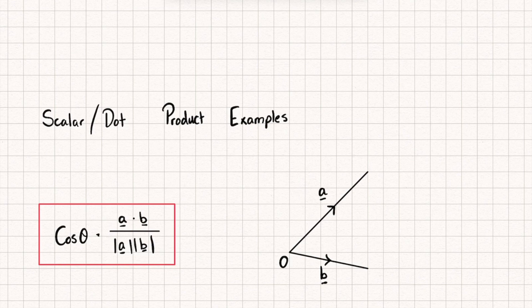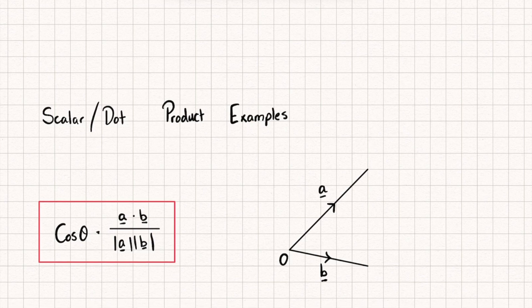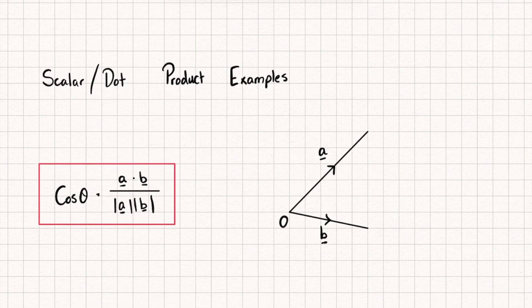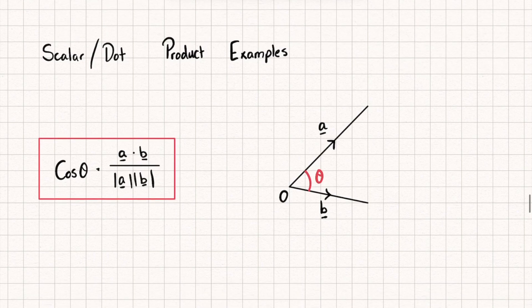Let's start by taking a look at the formula that we're going to be using. This is just the dot product rearranged to make cosine theta the subject, so we have cos θ equal to a dot b divided by the magnitude of a multiplied by the magnitude of b. Theta is the angle between our two vectors.